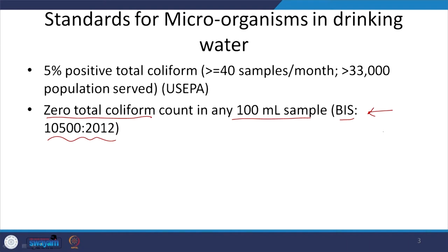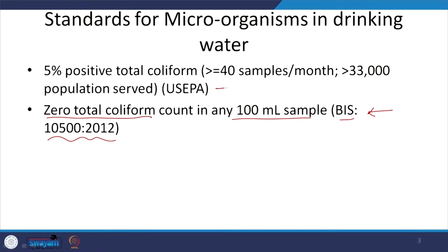Keep in mind that in India, regular testing infrastructure is still lacking, though improving. Comparing with US EPA: it allows 5% positive total coliform, but the rider is that you must take more than 40 samples per month, especially when the population is greater than 33,000. So the number of samples and acceptable positive rate are both specified — that is something to keep in mind.